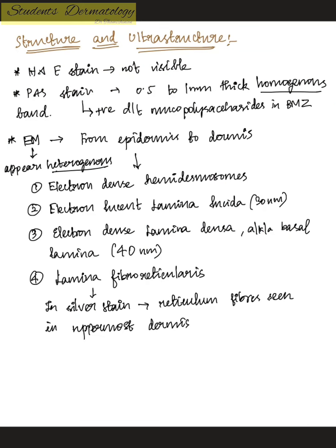This basement membrane zone is not visible by normal H&E stain. In PAS stain it is visible because of the presence of mucopolysaccharides, appearing as a thin magenta-colored linear band, about 0.5 to 1 mm in thickness, as a homogeneous band. In electron microscopy, from epidermis to dermis, you can see four structures: first, the electron-dense hemidesmosomes, and then the electron-lucent lamina lucida, which is about 30 nanometers in diameter.